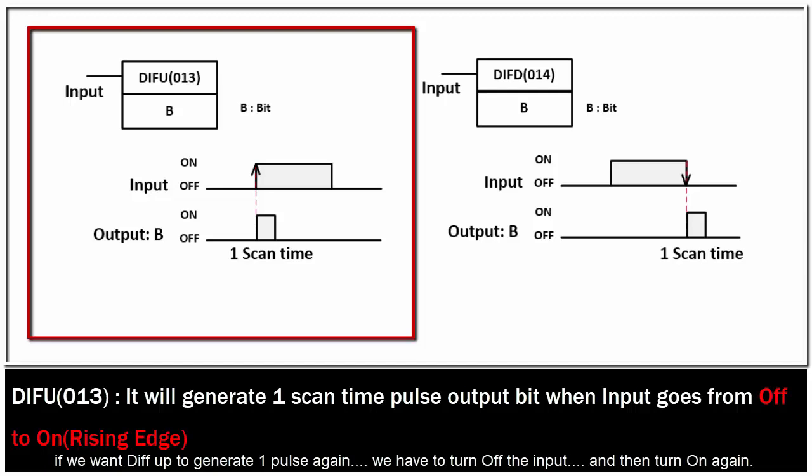If we want DIFUP to generate one pulse again, we have to turn OFF the input and then turn ON again.